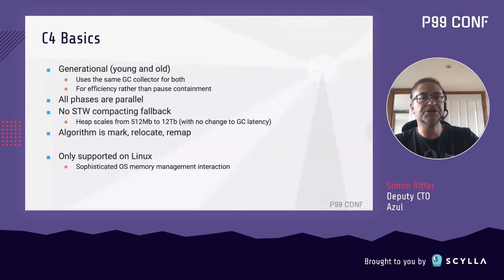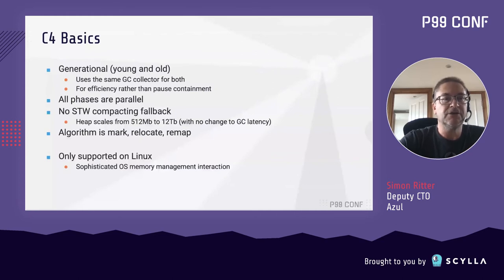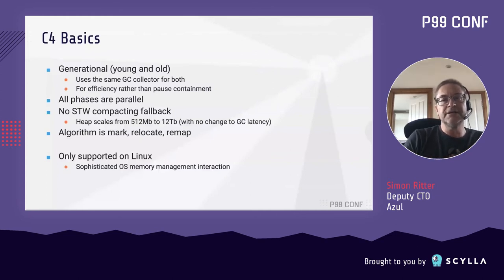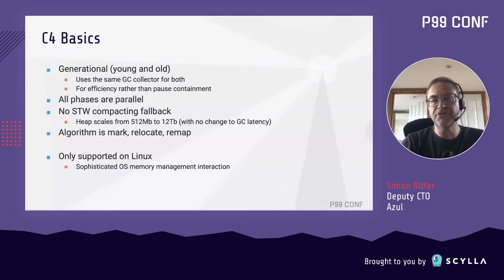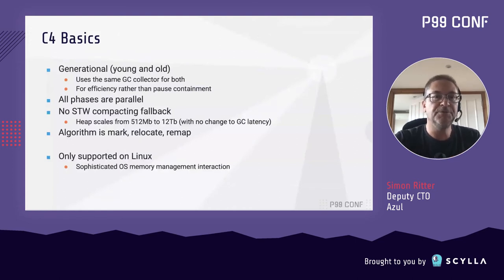What that means for us is that we can scale from heaps all the way from 512 megabytes up to 12 terabytes without any change in terms of latency. From an algorithmic perspective, it uses three phases: mark, relocate, and remap. One thing to mention here is that we've decided this is only supported on Linux, the reason being that we actually do some clever things in terms of the way that memory management happens — we use some specific system calls in the kernel, and we also have a kernel module that we can use for larger heaps to optimize memory even further.